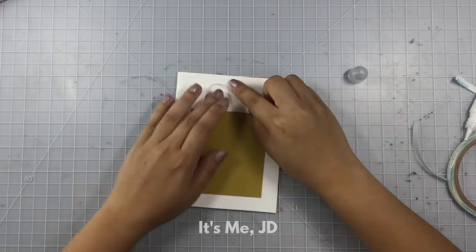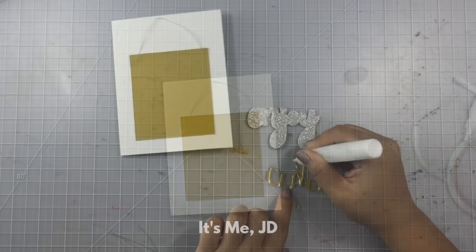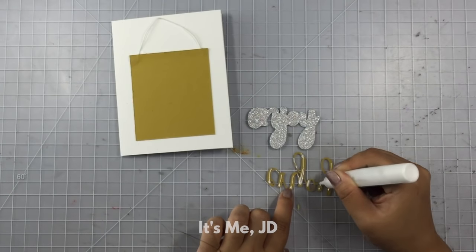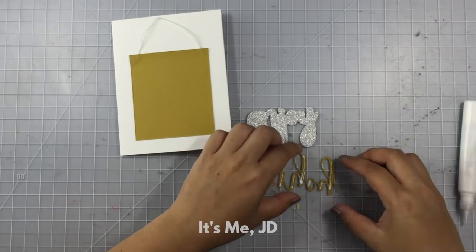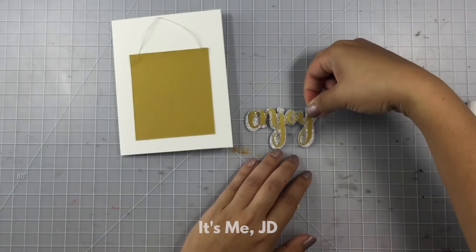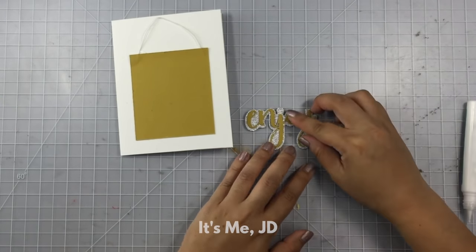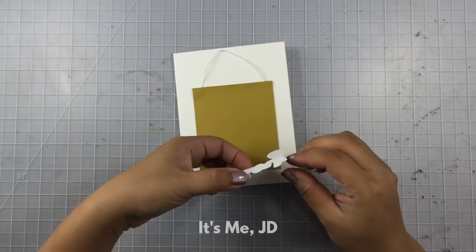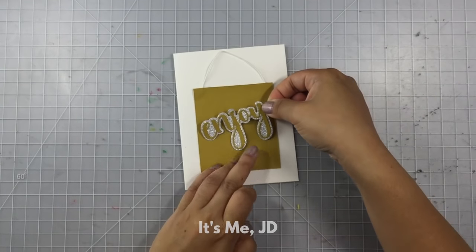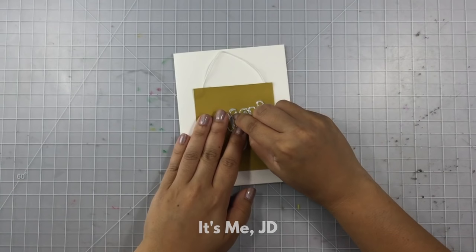I ran a word die through my die cutting machine earlier and now my word die cuts and its shadow is ready to go. I'm just going to put some liquid adhesive on the back and attach that. And I put more glue on this entire die cut piece and now I'm going to put that on the front of my shopping bag.